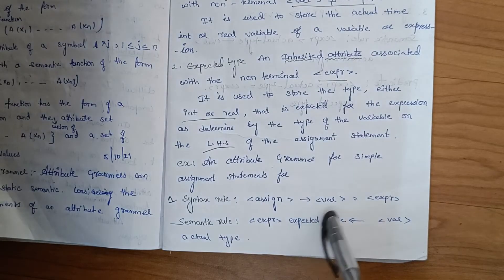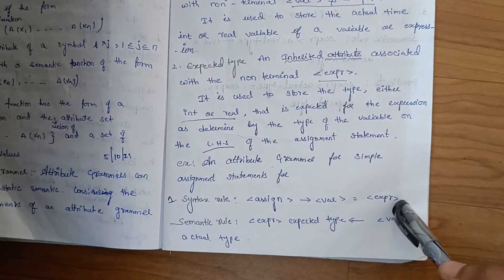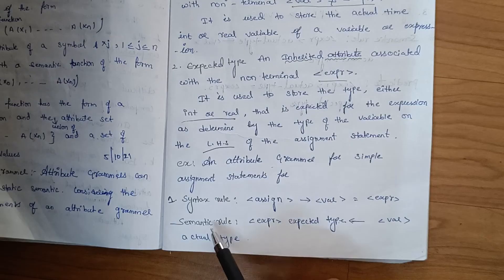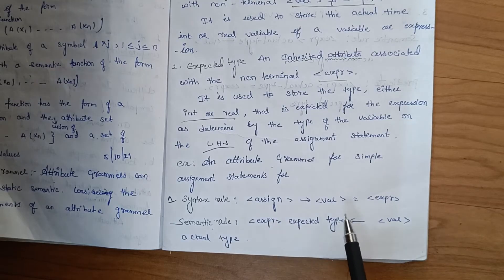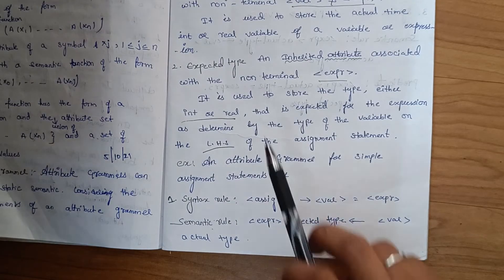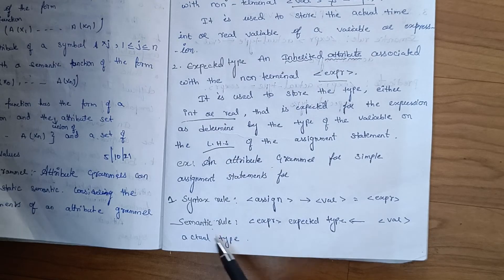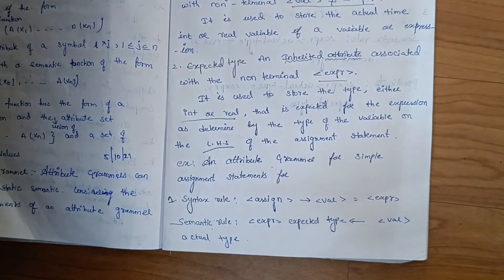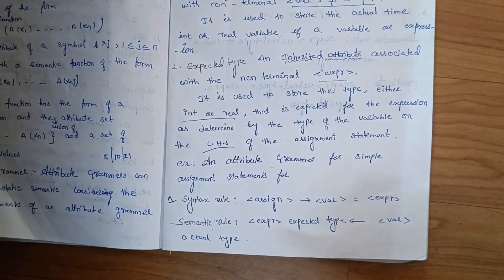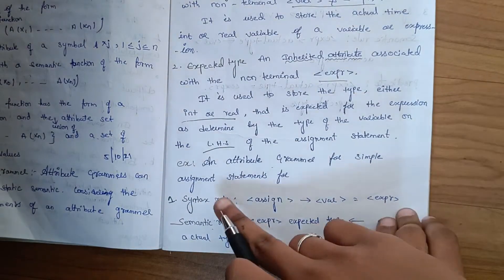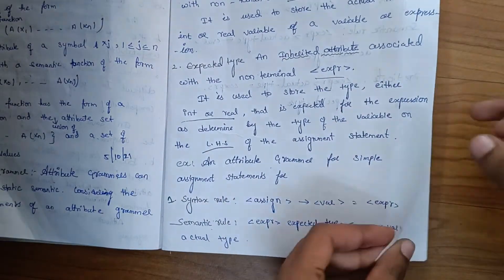The semantic rule follows: expression expected type equals variable actual type. The syntax rule and semantic rule together allow us to define the attribute grammar. Expression maps to variable. The actual type is computed through these semantic rules in the attribute grammar.